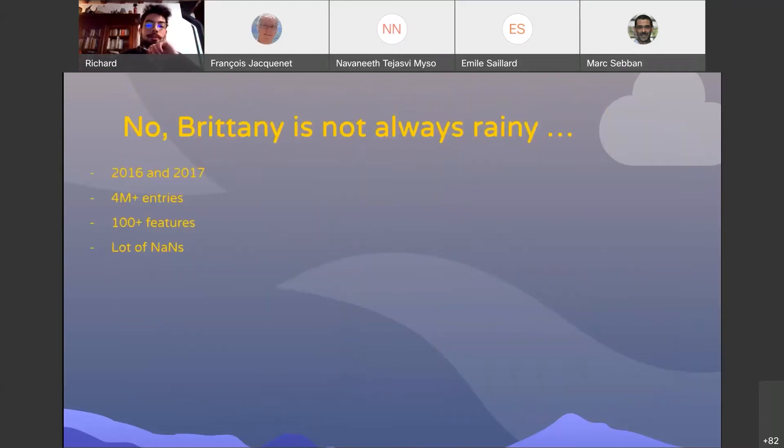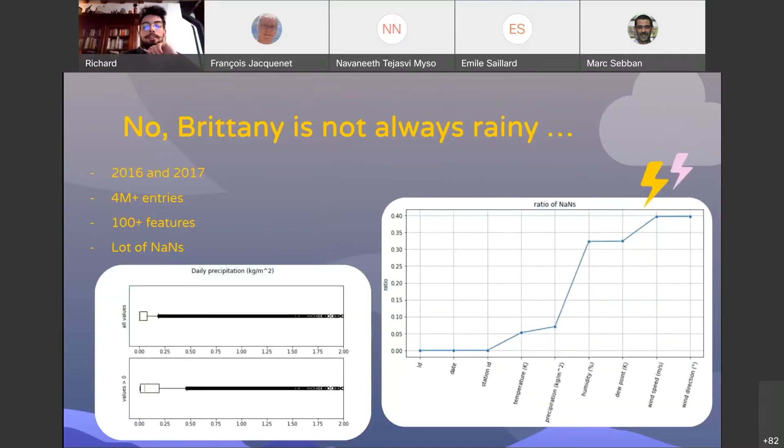Our training data was collected during the years 2016 and 2017. But to avoid cheating, we don't have access to the date of the test data. This means that we couldn't use time series in order to do predictions. On the right, you can see that for some of the features of the weather stations, we have a lot of missing values, about 40% for some of them.